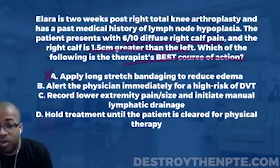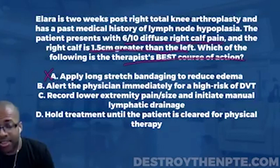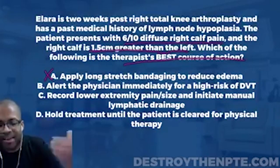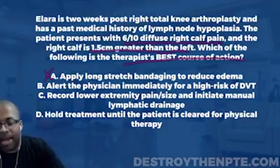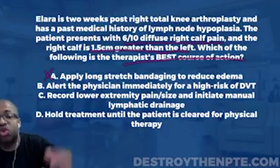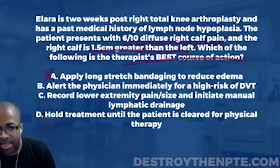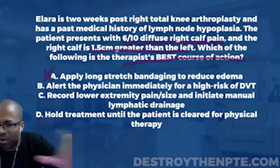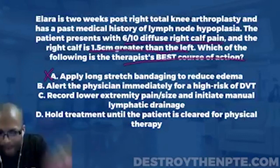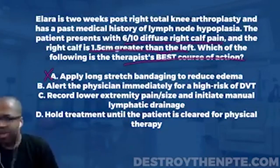On the Wells Clinical Prediction Rule, a score of three or higher indicates high risk for DVT. One criterion is major surgery within the past 12 weeks — that gives one point here. Another criterion is a calf size three centimeters or greater than the unaffected side — but this patient's right calf is only 1.5 centimeters greater, so that does not earn a point.